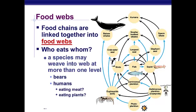If a certain population starts to go down or starts to increase, it's going to affect the rest of the food web in turn.